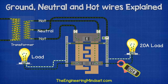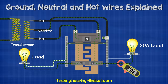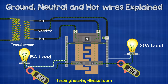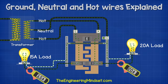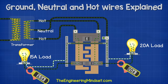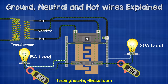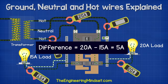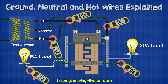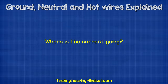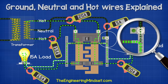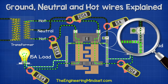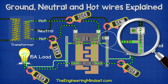Now if we have a load on only one half of the coil — say for example 20 amps — then the hot wire will carry 20 amps to the load and the neutral wire will carry 20 amps back to the source. But if we have another load on our other half of the coil at a different value, say 15 amps, then the neutral will only carry the difference between these two values back to the transformer. So in this case — 20 amps on one side and 15 amps on the other — the neutral will carry just 5 amps, with the rest passing through the two hot wires.